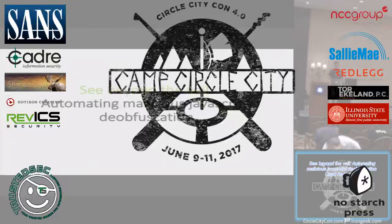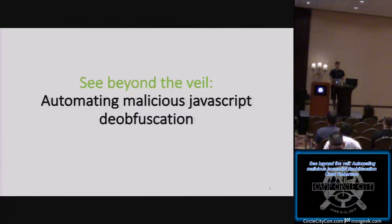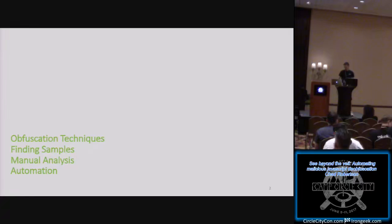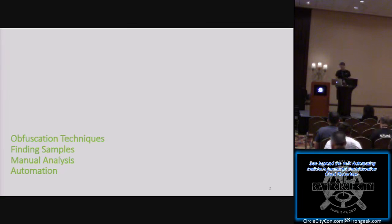Good morning Circle City Con, glad you made it to the first talk of Sunday. This is a talk about automating malicious JavaScript deobfuscation. The agenda covers obfuscation techniques focused on Rig exploit kit — though these techniques apply to any JavaScript — then how to find samples, manual analysis with live debugging, and finally how to automate retrieval of obfuscated content.